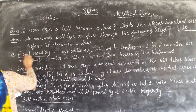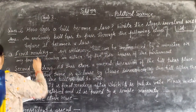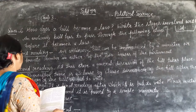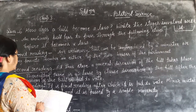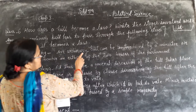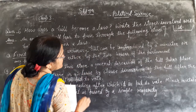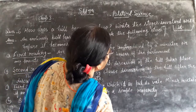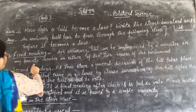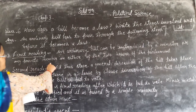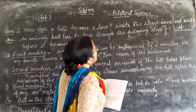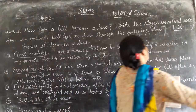Number 1: First Reading. An ordinary bill can be introduced by a minister or any private member in either of the houses of the Parliament.